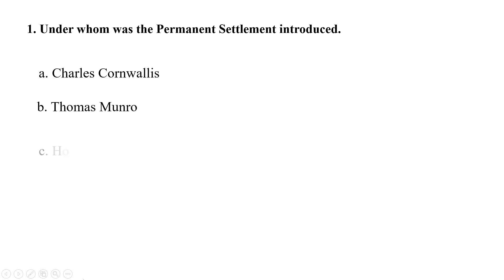Let us see what you have learned today. Here are some questions for you. Question number one: under whom was the Permanent Settlement introduced? The options are: A. Charles Cornwallis, B. Thomas Munro, C. Holt Mackenzie, D. Warren Hastings. And the correct answer is A. Charles Cornwallis.